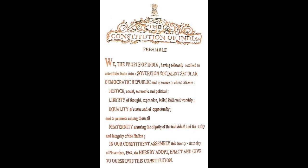The Constitution of India, Preamble: We, the people of India, having solemnly resolved to constitute India into a sovereign, socialist, secular, democratic republic and to secure to all its citizens Justice — social, economic and political — Liberty of thought, expression, belief, faith and worship, Equality of status and of opportunity, and to promote among them all fraternity assuring the dignity of the individual and the unity and integrity of the nation. In our Constituent Assembly, this 26th day of November 1949, do hereby adopt, enact and give to ourselves this Constitution.